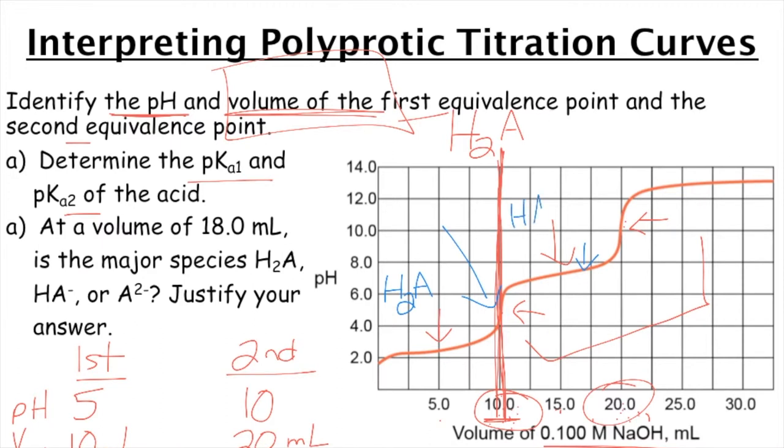Now notice that 18 milliliters is slightly past equivalence. I mean half equivalence. And so if you're slightly at half equivalence, your acid is equal to your conjugate base. So right here on this arrow at our 15 milliliters, we had equal concentrations of these two species.